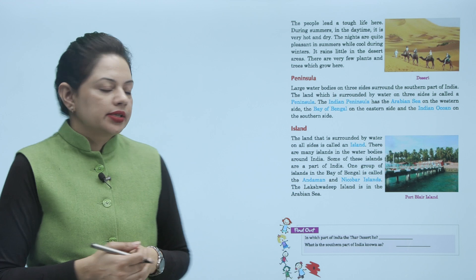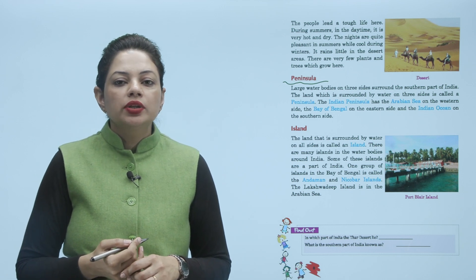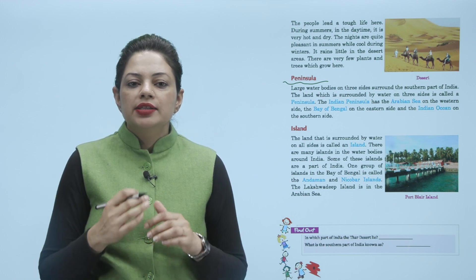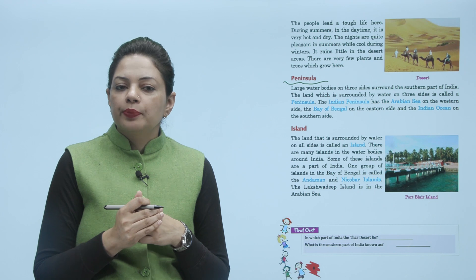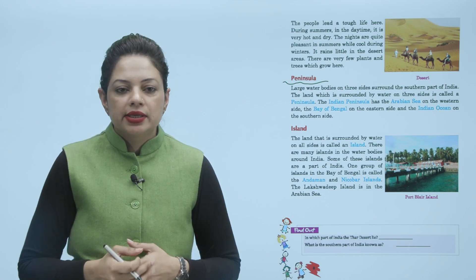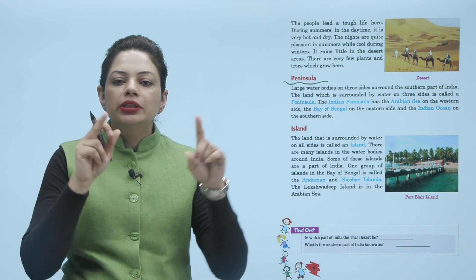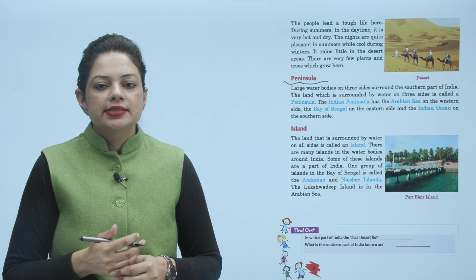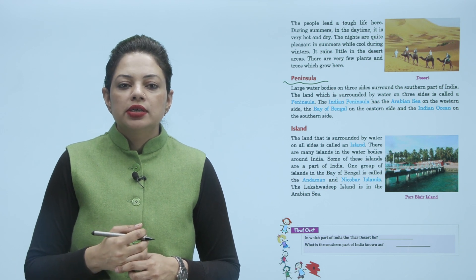Peninsula: large water bodies surround three sides of the southern part of India. The land which is surrounded by water on three sides is called a peninsula. The Indian Peninsula has the Arabian Sea on the western side, the Bay of Bengal on the eastern side, and the Indian Ocean on the southern side.